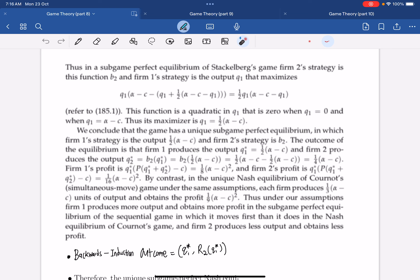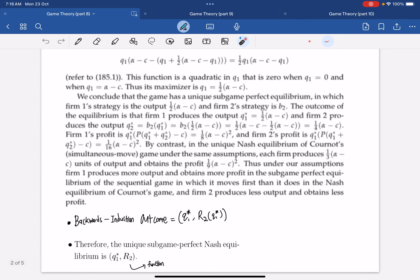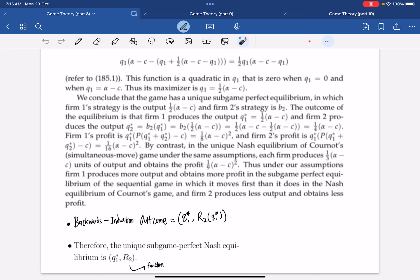And you can see now how this is different from when it's simultaneous game. In the previous video, I have shown that each firm will produce, if it was a simultaneous move game, one-third A minus C. And the profits will be one-ninth A minus C squared. Under our game now, firm 1 will actually have to produce more output, which obtains even more profit in this sequential game. So, it's somewhat like a first mover's advantage.